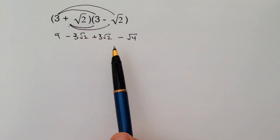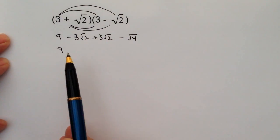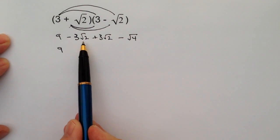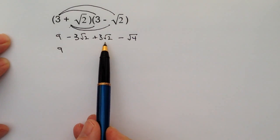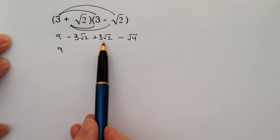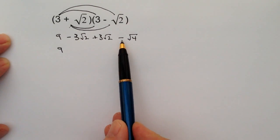Now we need to tidy this up a little bit. That's going to give us nine. We've got minus three root two plus three root two - those two terms are going to cancel themselves out, so we need to ignore those completely.